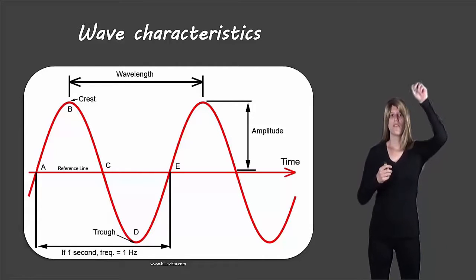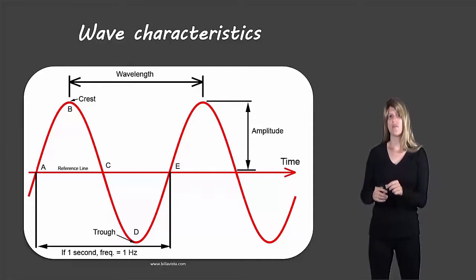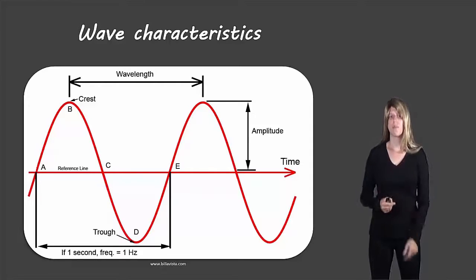So the very, very tip top of the wave is called a crest. Just like you would call a wave in the water, the crest. And the very, very bottom is called the trough. So you have the crest and the trough are the two top and bottom pieces.